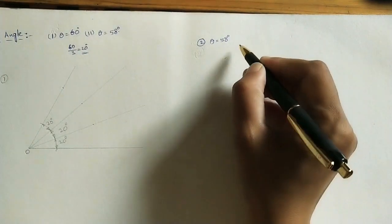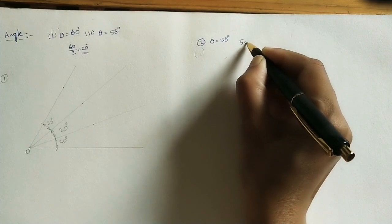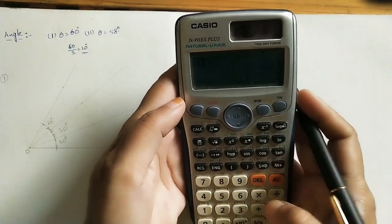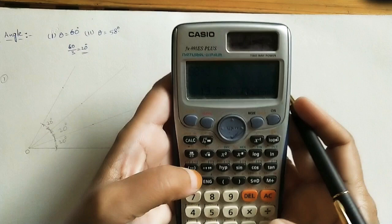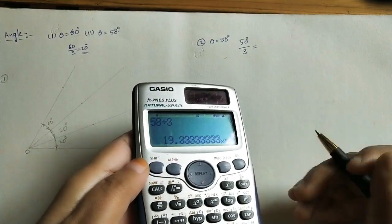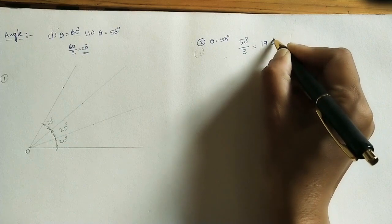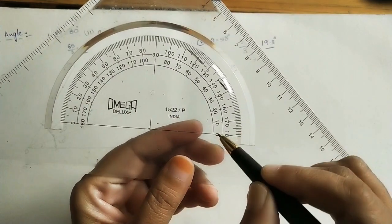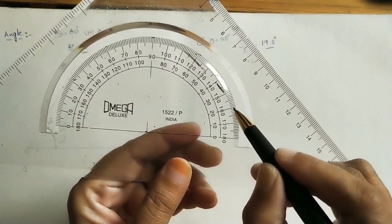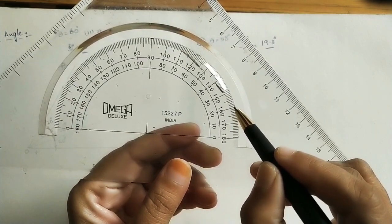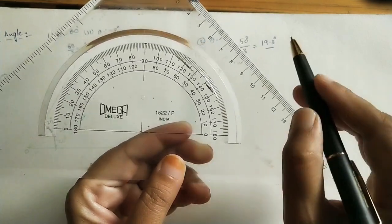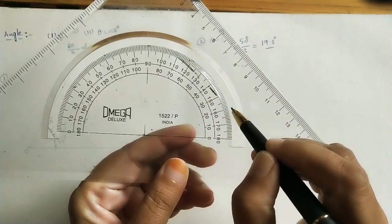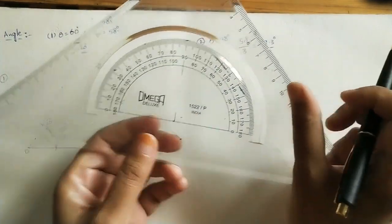Now for the second case: the given angle is 58 degrees. We have to trisect this, so 58 divided by 3 gives 19.3 degrees. Is it possible to mark 19.3 degrees using the protractor? On the protractor we can see 10 degrees, 20 degrees — 19 is just before 20. So 19.3 falls between 19 and 20, and we can't exactly mark 19.3 degrees with the protractor.